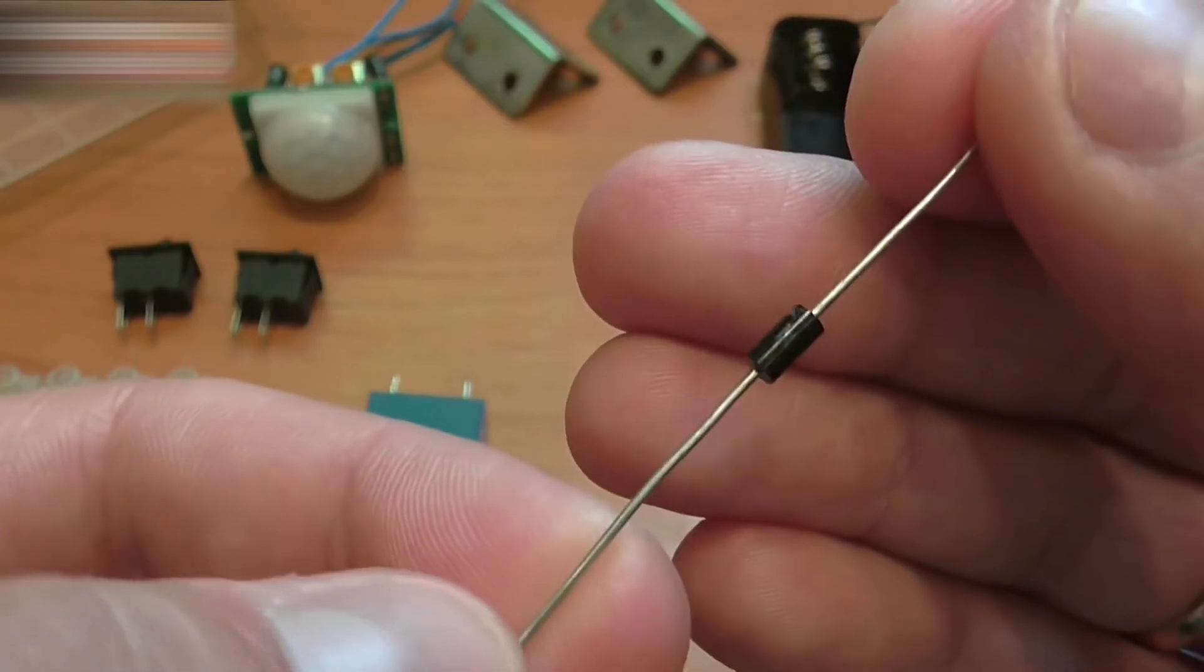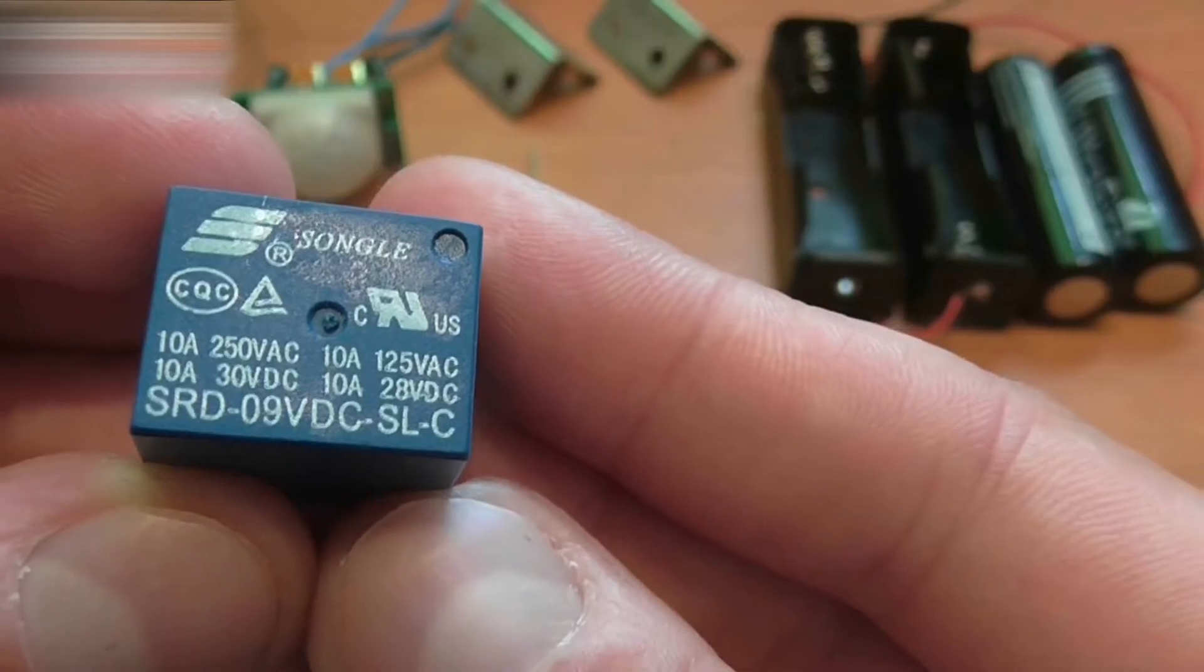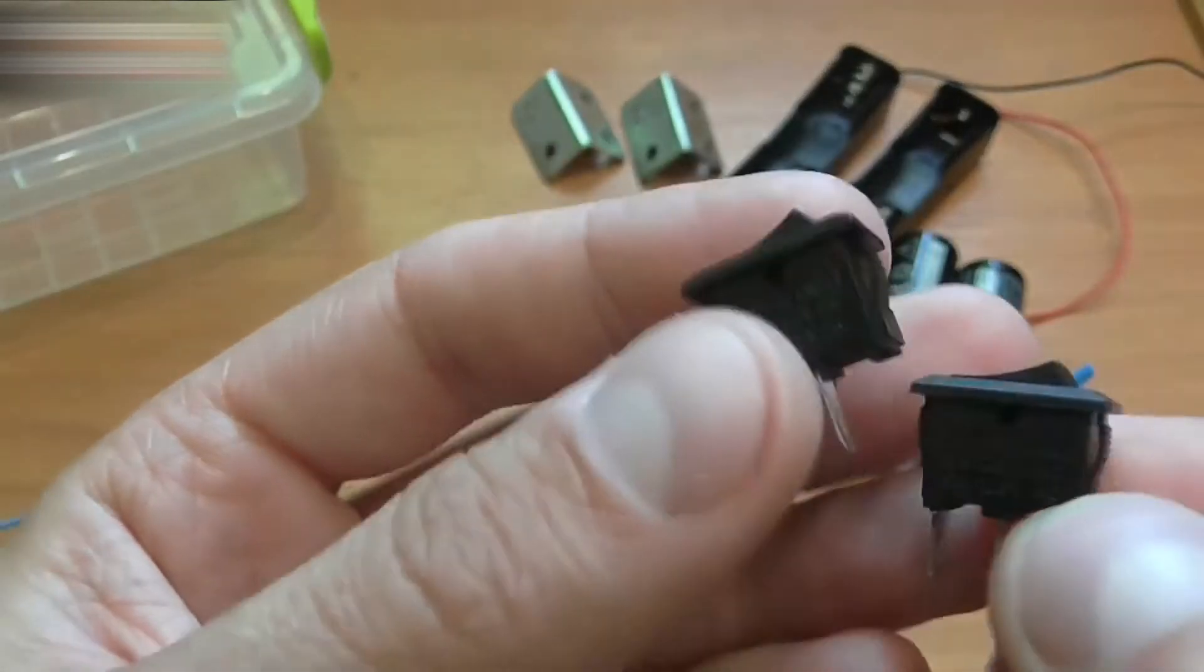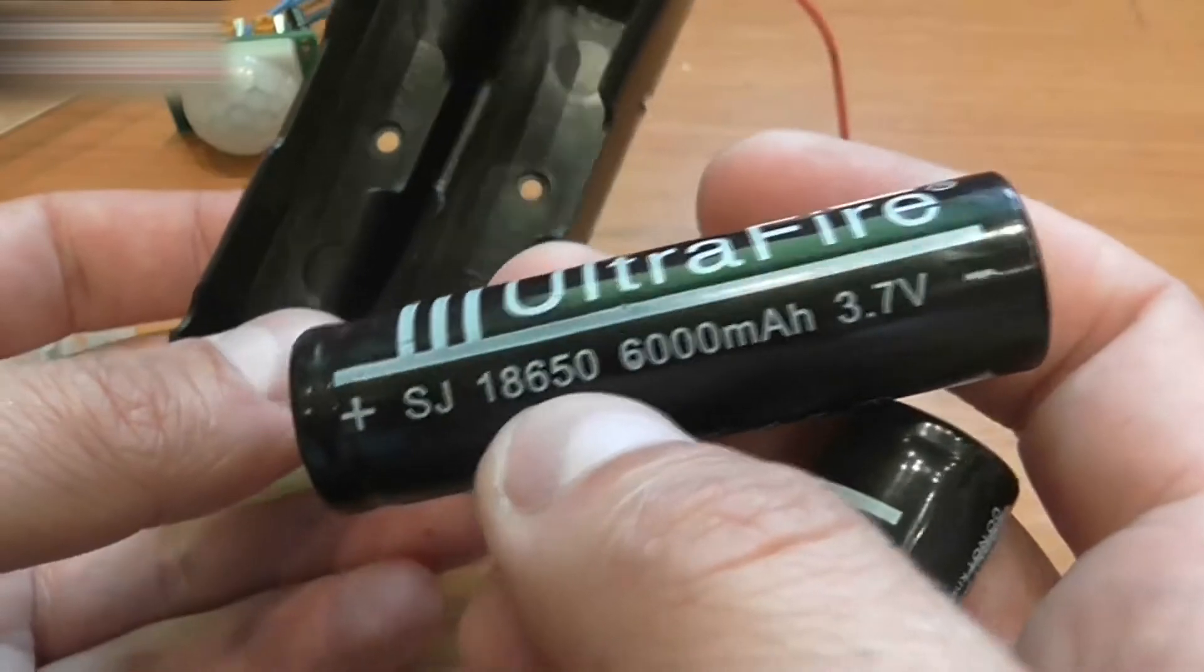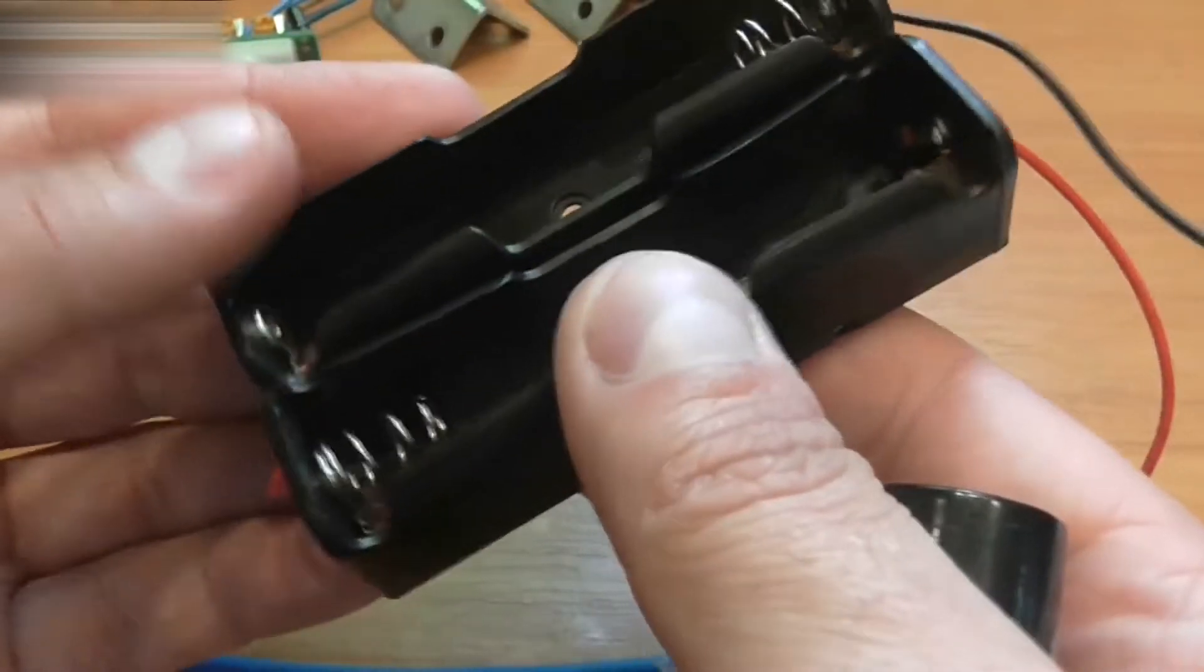A 1A diode. I'm using a 1N5819 Schottky diode, a 9V relay, two switches, two 18650 batteries, and two serially connected cases for them.